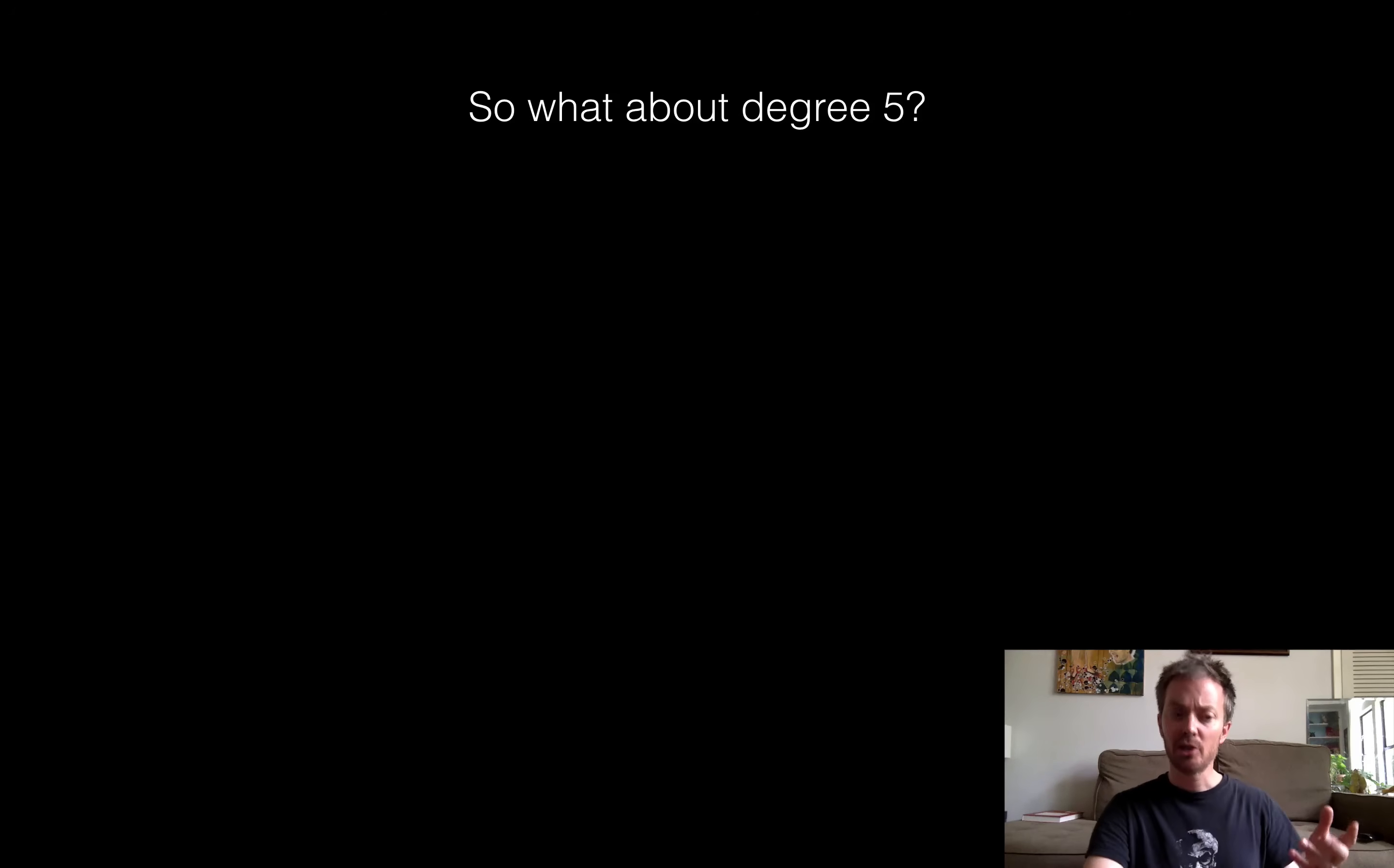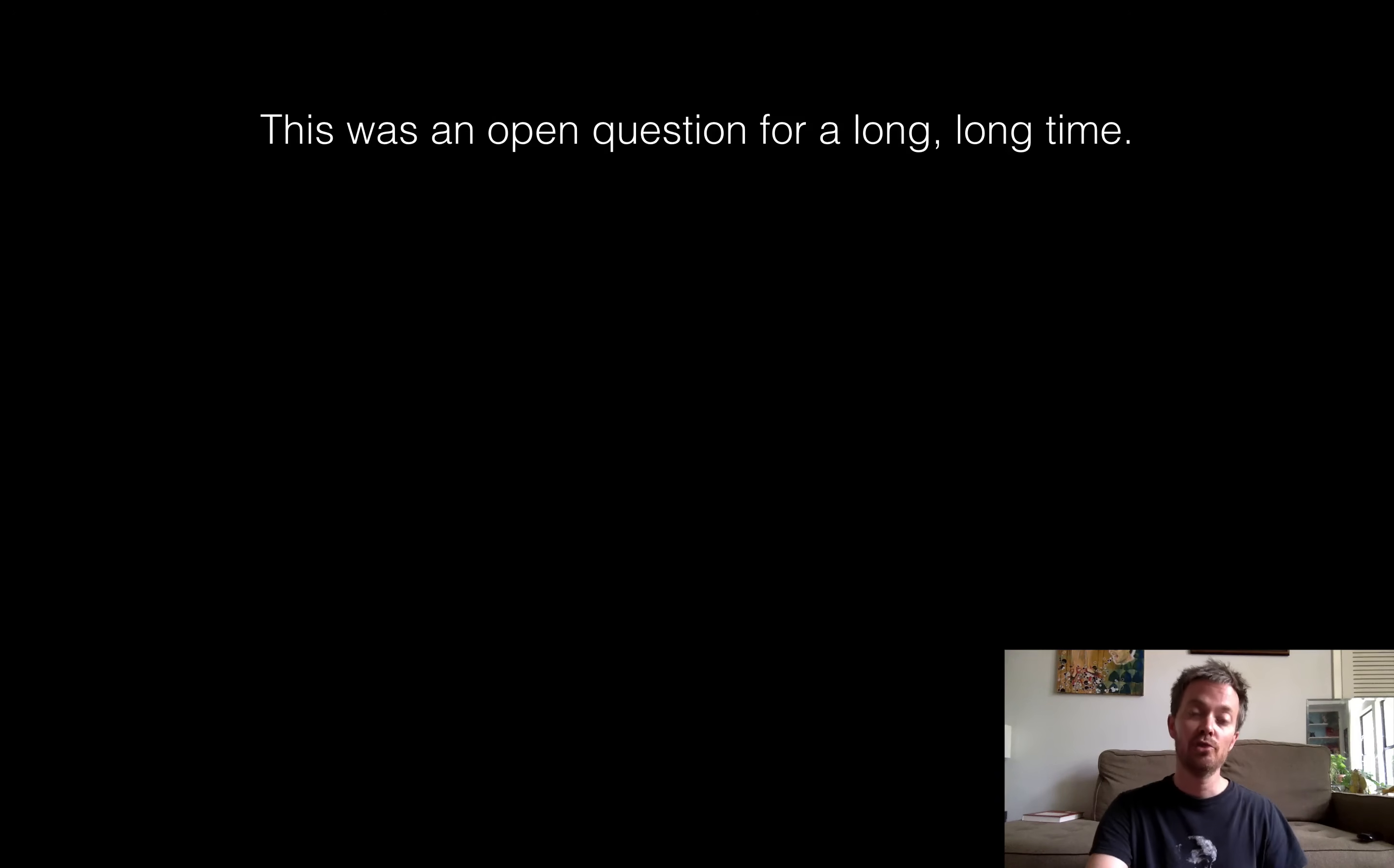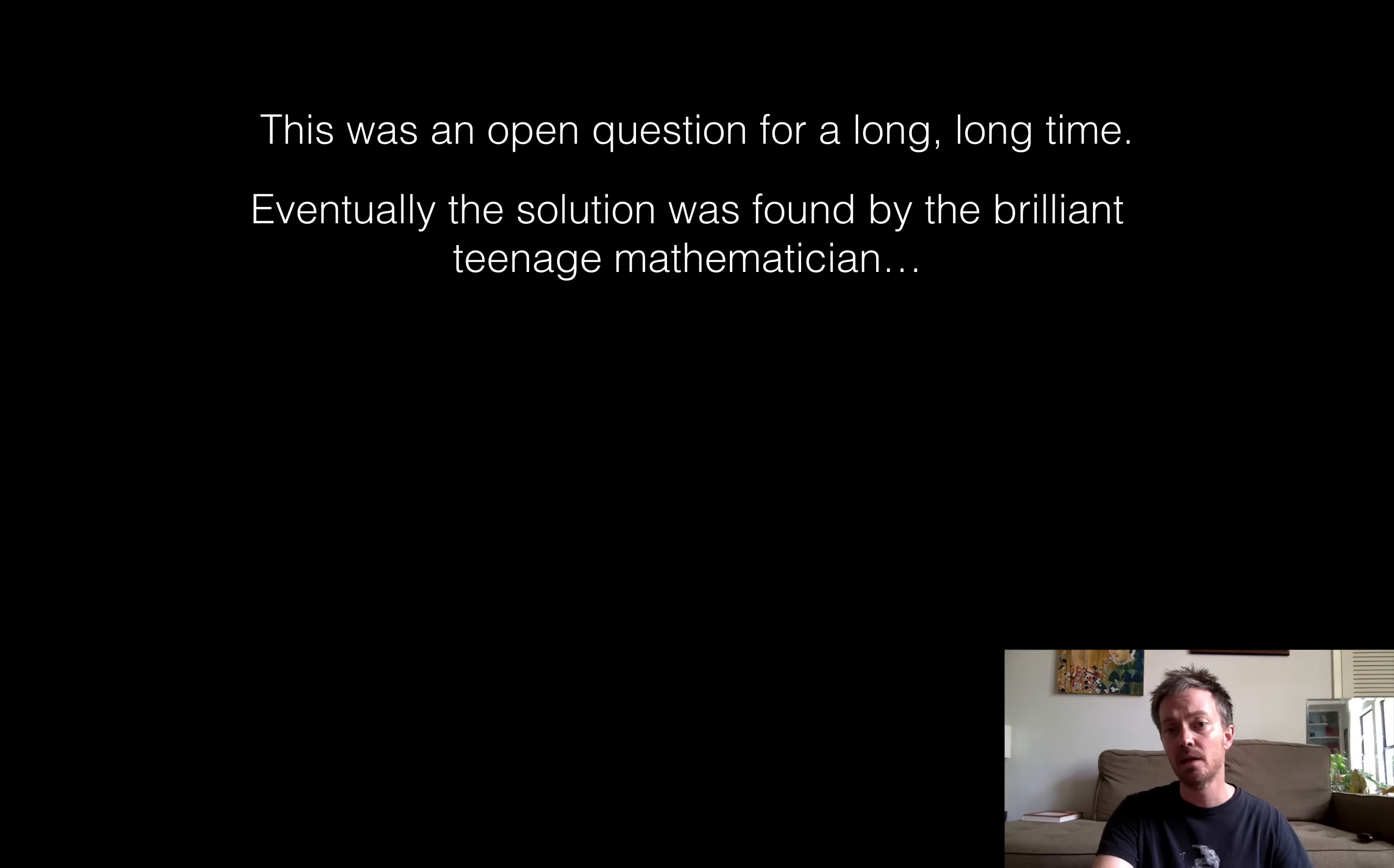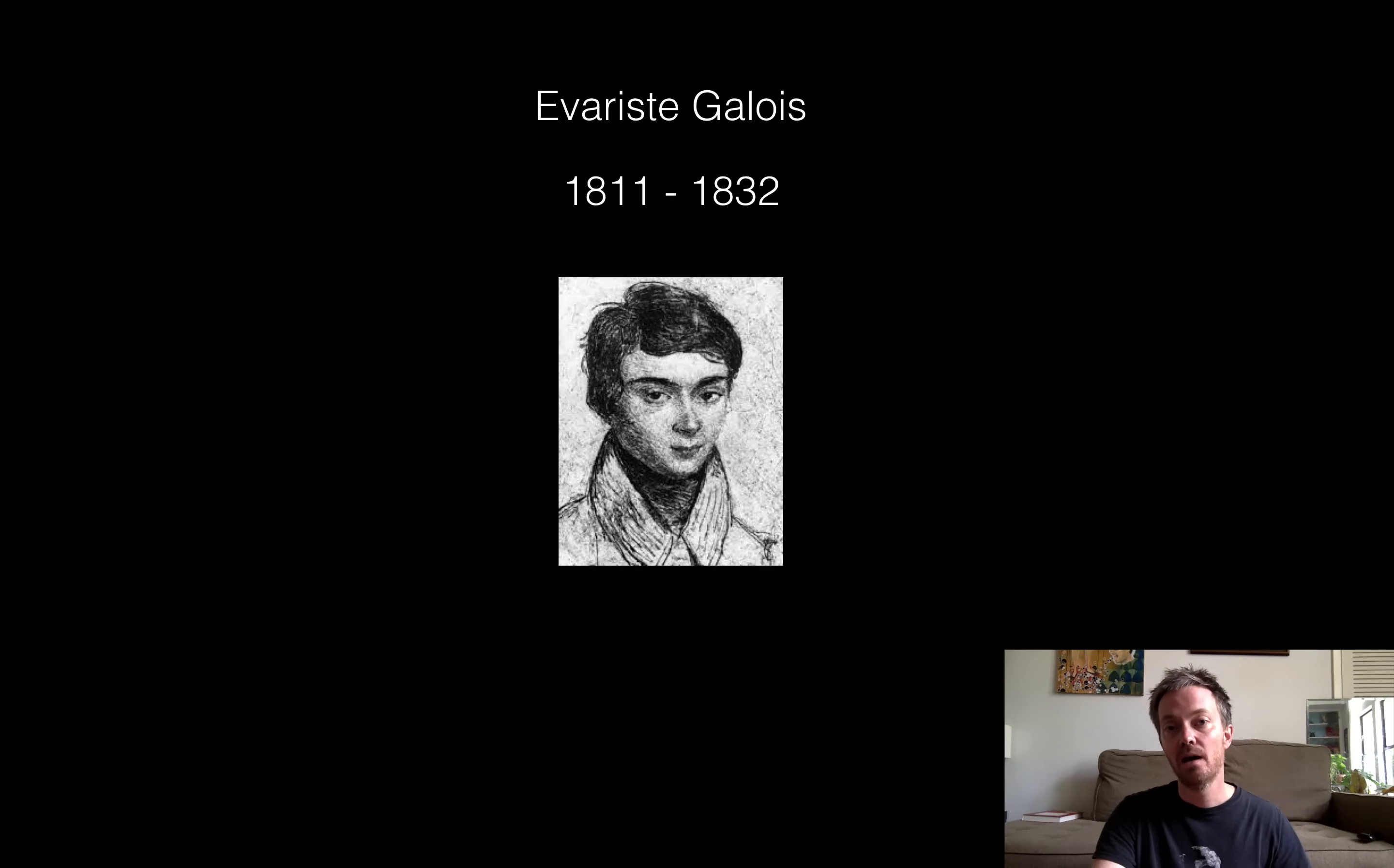So the question is, what about degree 5? Are there these general solutions for degree 5 polynomials? And why stop at degree 5? Let's just keep going forever and ever and ever. Well, it turns out that this was an open question for a long, long time. And some of the top mathematicians in the world tried to tackle this problem. And they couldn't really gain any traction. I think about 350 years, at least, people were working on this problem. And eventually it was solved by a brilliant mathematician, but a teenage mathematician, which was, to me, it's pretty amazing. One of the most brilliant minds in mathematics, Galois.